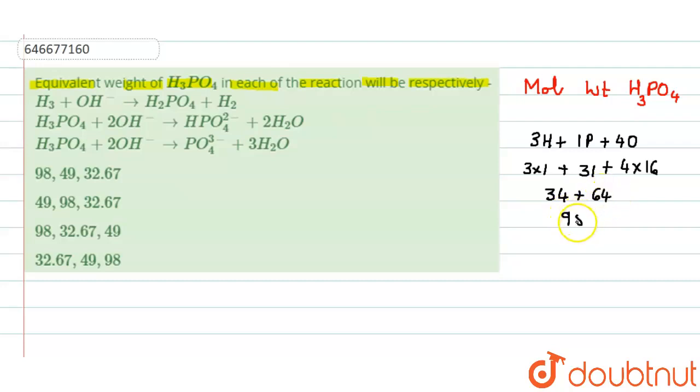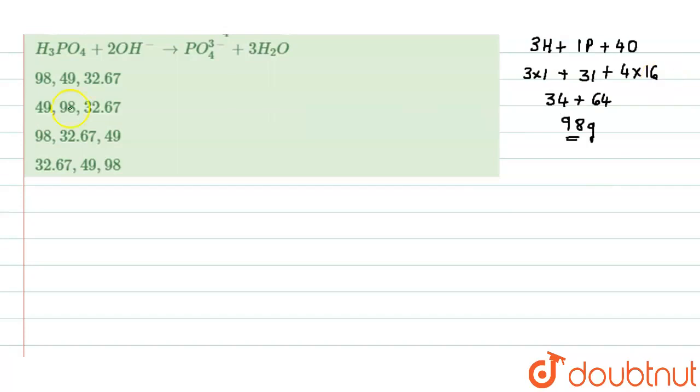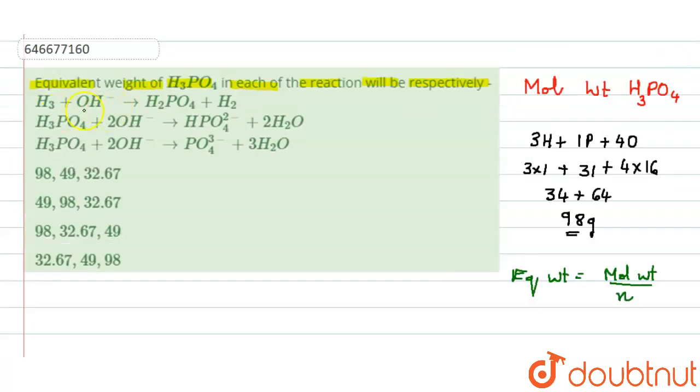So next we have to know the formula of equivalent weight. Equivalent weight is equal to molecular weight divided by n factor. Okay, now we have to see the n factor in each case.